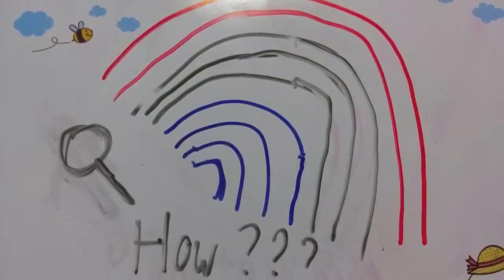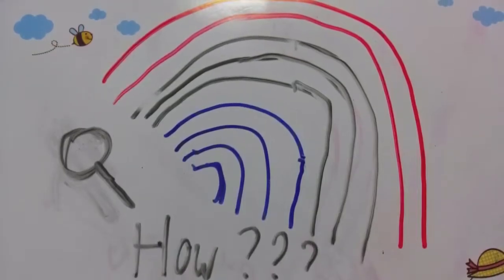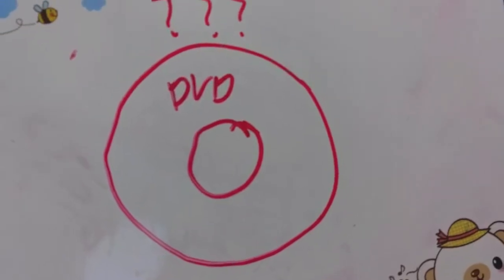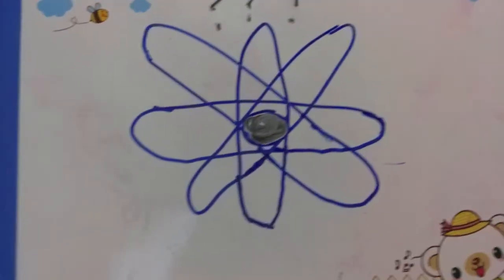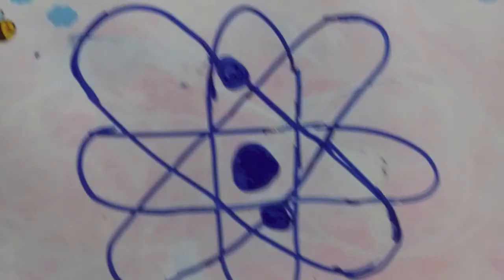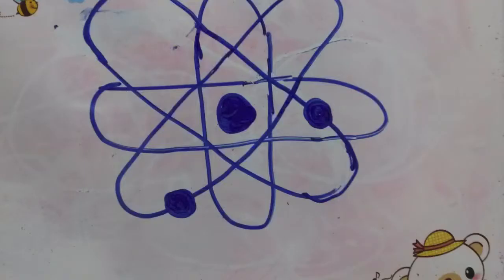But how are planetary rings formed? That is the mystery. Is it just a CD that we use in our daily lives? Or does a ring have a certain theory of how it is made?